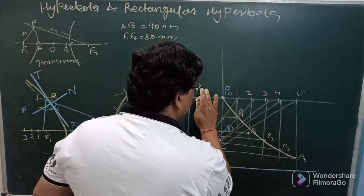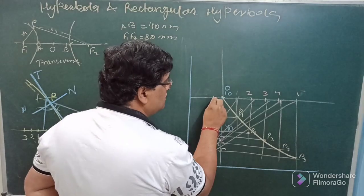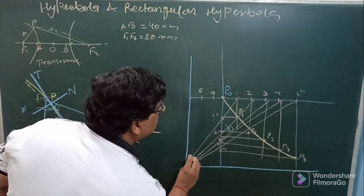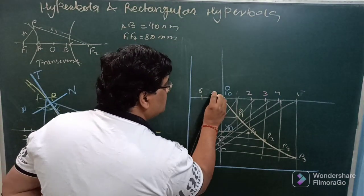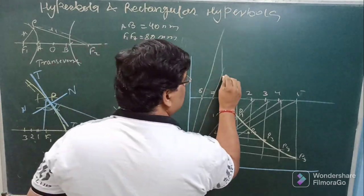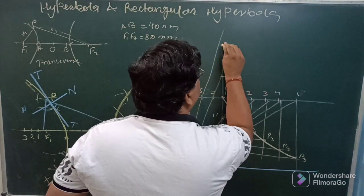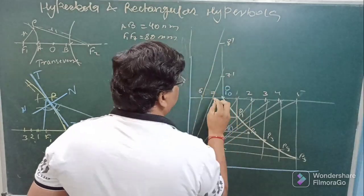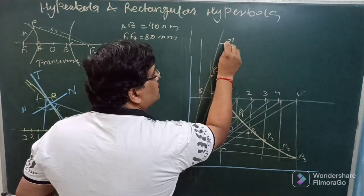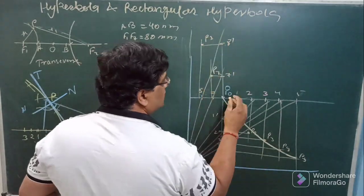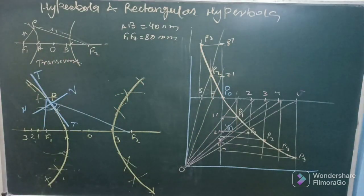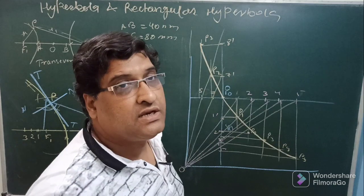For extending this curve towards this side, you can assume 1 or 2 points this side also. Say this is 7, this is 8. Again join these points also with the O and extend backward up to the vertical line to get 7 dash and 8 dash. Now vertical line from this side, horizontal from this side, so p7 will be obtained. This is vertical, this is horizontal, p8 is obtained. So you can extend this curve towards this direction also. This curve is termed as rectangular hyperbola.